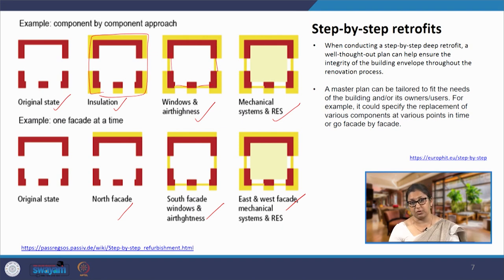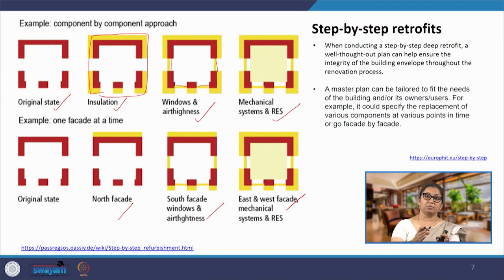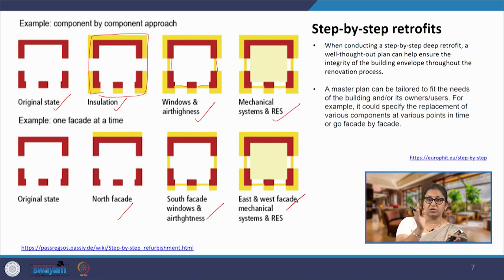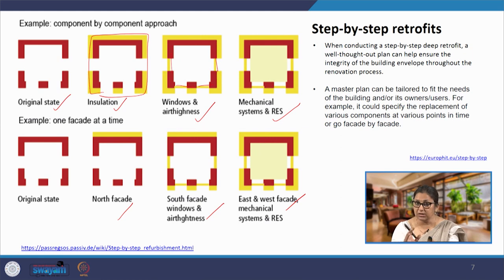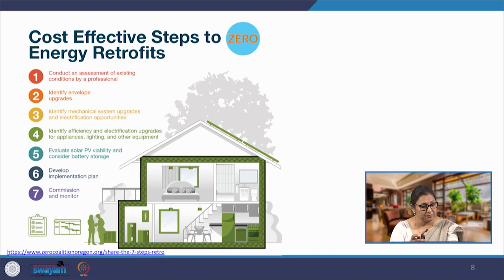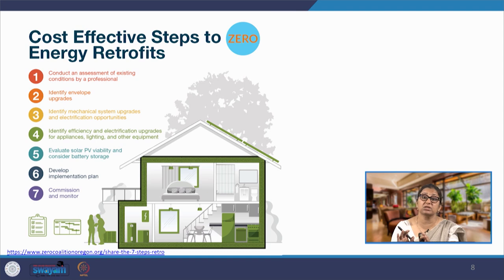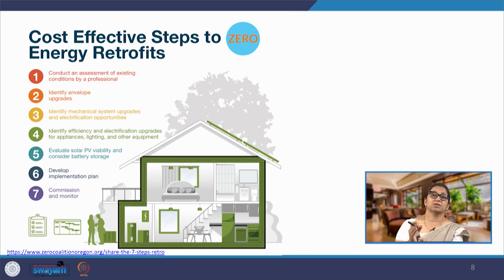Each building was serving a different purpose and is being retrofitted for a different purpose. There could be occupants already occupying the building, meaning retrofitting must be done in phases — doing exteriors first and then gradually moving into interiors. A lot of retrofits are being done to reduce the operational energy requirement, which will give a significant reduction in scope 2 emissions.